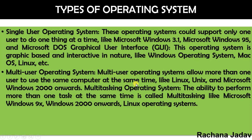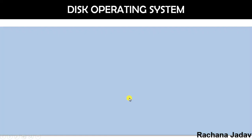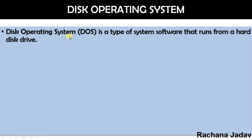In a multi-user operating system, many users can work on the same computer at the same time. You can switch users in Linux, Unix, and also in Windows. Multi-tasking means you can perform many tasks at the same time — this feature is also available in Linux and Windows.